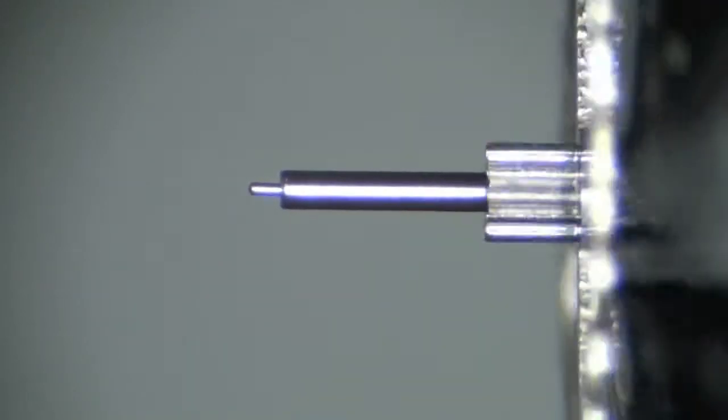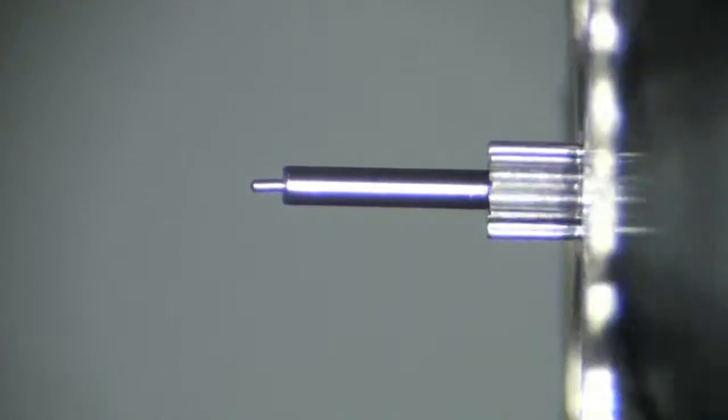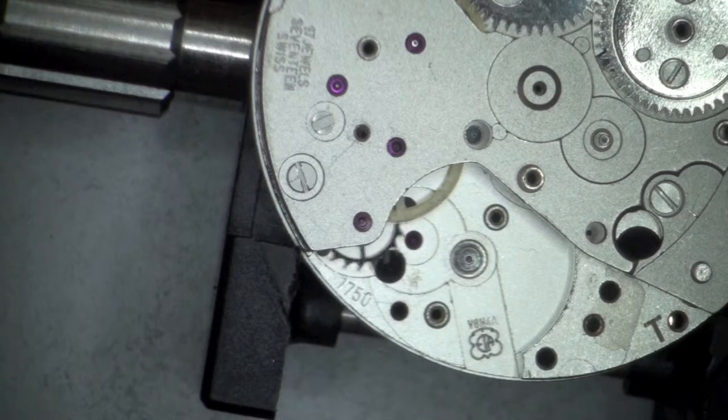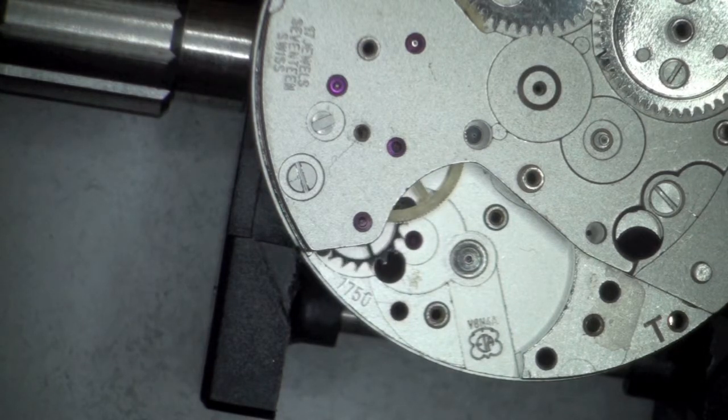If this was not corrected, the watch would perform erratically with a fluctuating rate and amplitude. Depending on the material properties of the escape wheel in your watch, the pivot may be able to be straightened and repaired or will require replacement.